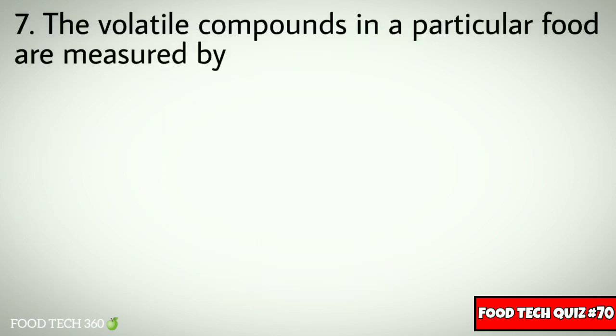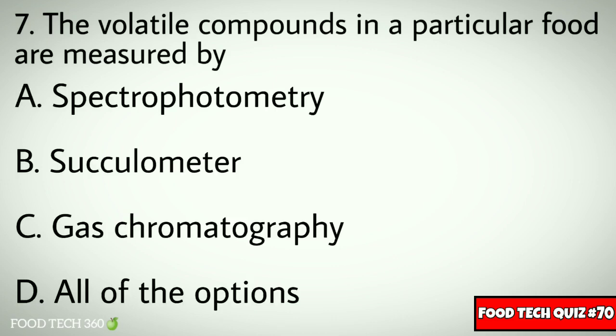Q7. The volatile compounds in a particular food are measured by which instrument? Options: A. Spectrophotometry, B. Circulometer, C. Gas chromatography.